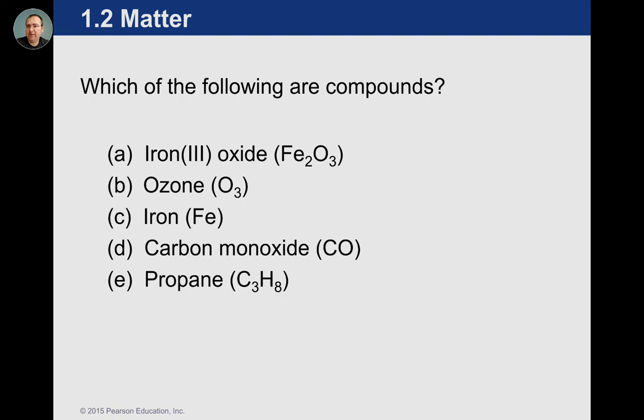If we were to see the formulas, it's a little bit easier. Two capital letters is a compound; one capital letter is elemental, so just a pure substance. This is the case for iron oxide — Fe and O. The lowercase 'e' is just along for the ride to help distinguish it from fluorine, which is capital F.